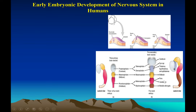Around two to three weeks of pregnancy, you can see the neural tube forming. By three to four weeks, the anterior part swells up to form a vesicle called the prosencephalon, which differentiates into the telencephalon and diencephalon, eventually becoming the cerebrum. The diencephalon becomes the thalamus, hypothalamus, and epithalamus. The mesencephalon becomes the midbrain.